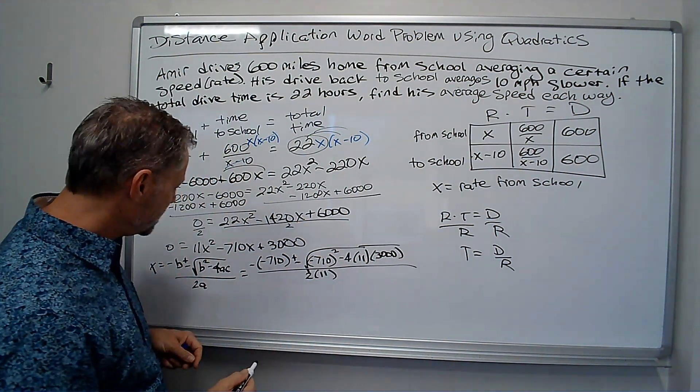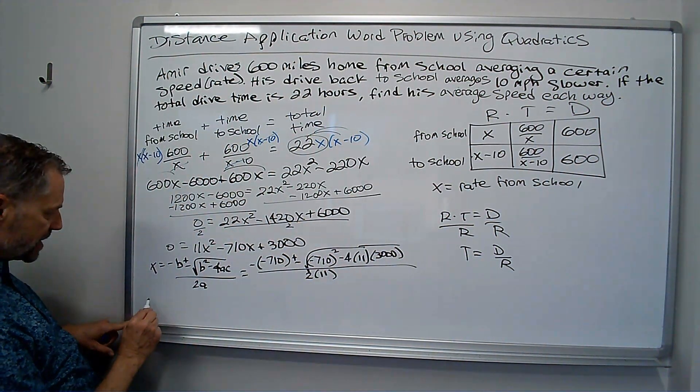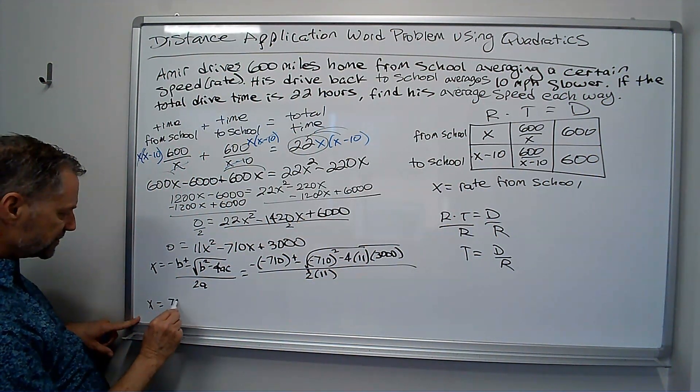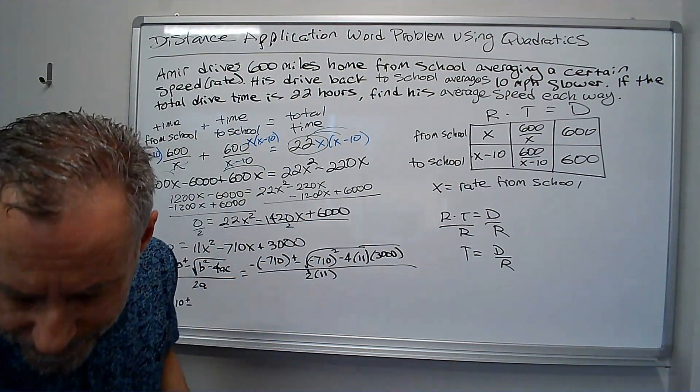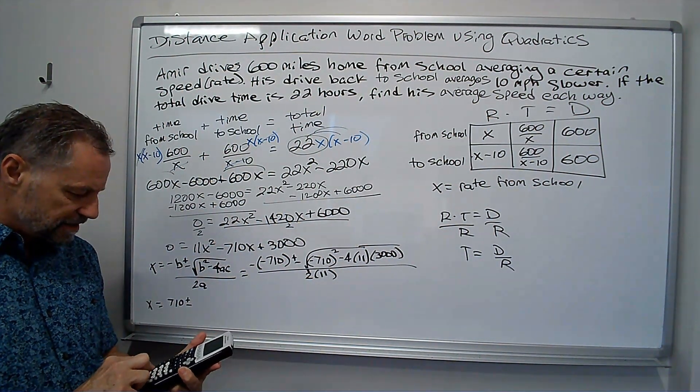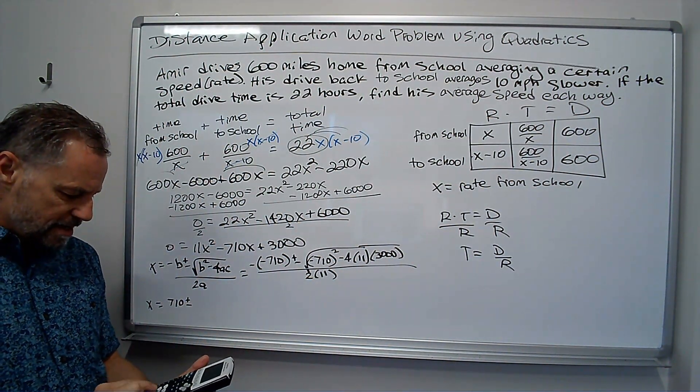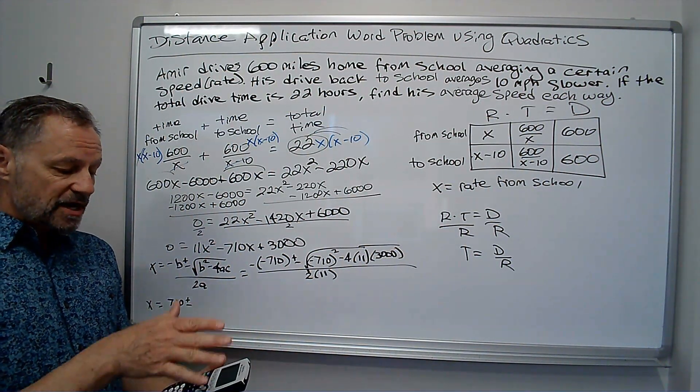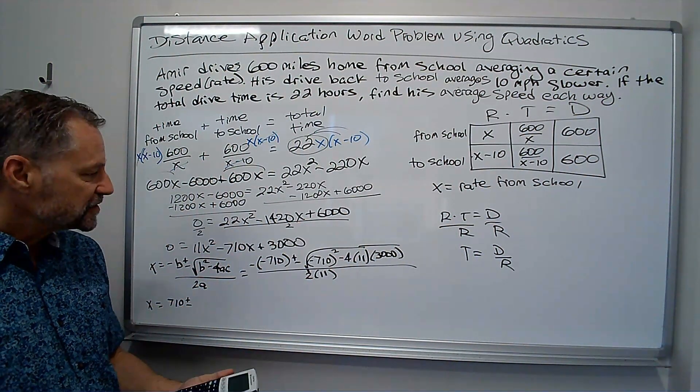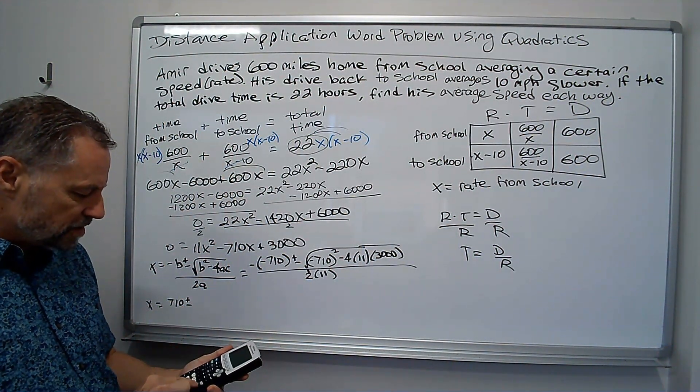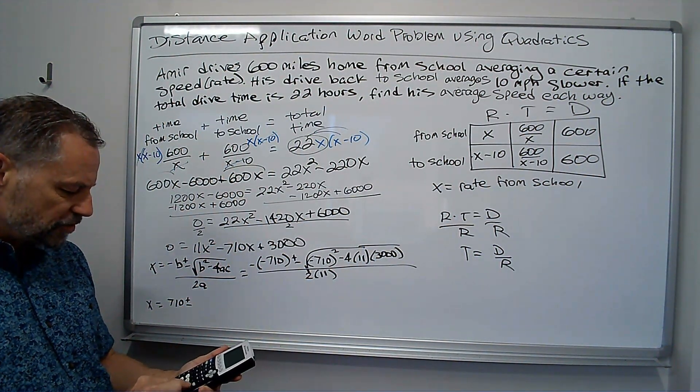So, I'm going to use my calculator to help me out here. I've got X equals positive 710 plus or minus the square root. Let's see what negative 710 squared is. Make sure you square that correctly and get the positive number. It's 504,100. But minus 4 times 11 times 3,000.